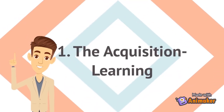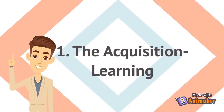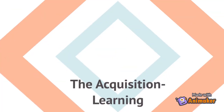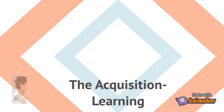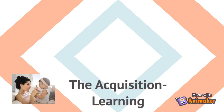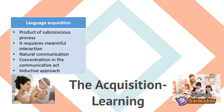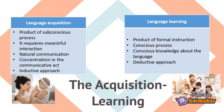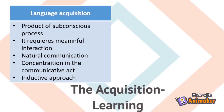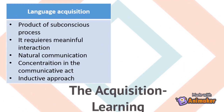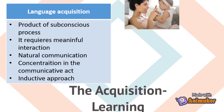The acquisition learning hypothesis. According to Krashen, there are two independent systems of foreign language performance. Number one, the language acquisition. And number two, the language learning. The language acquisition is the product of a subconscious process, very similar to the process children undergo when they acquire their first language.